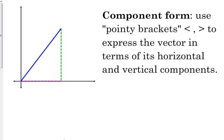It's component form. We use what we call pointy brackets, not parentheses, because parentheses indicate points. But we use pointy brackets to express the vector in terms of its horizontal and vertical components. Horizontal, like always, is its x. Vertical, like always, is its y.